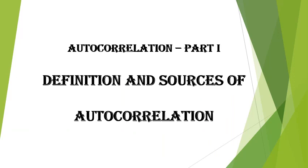From the earlier lectures, we have seen how we frame an econometric model with the usual classical linear regression model assumptions. Our present discussions are going around the violations of these assumptions. We already discussed the sources, detection and remedial measures of the problems of multicollinearity and heteroscedasticity. I hope all of you went through the lecture notes of the earlier classes. If not, I request you to go through them once again.